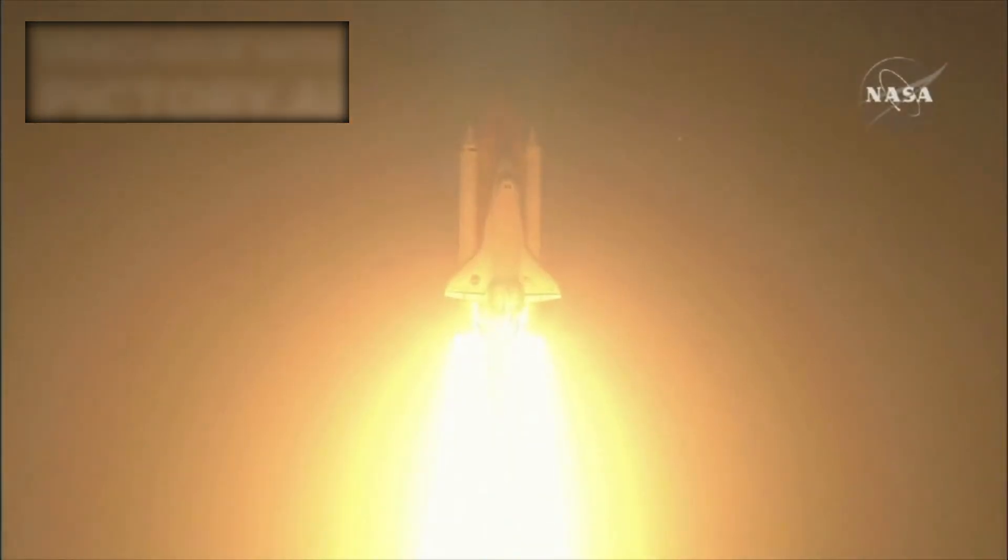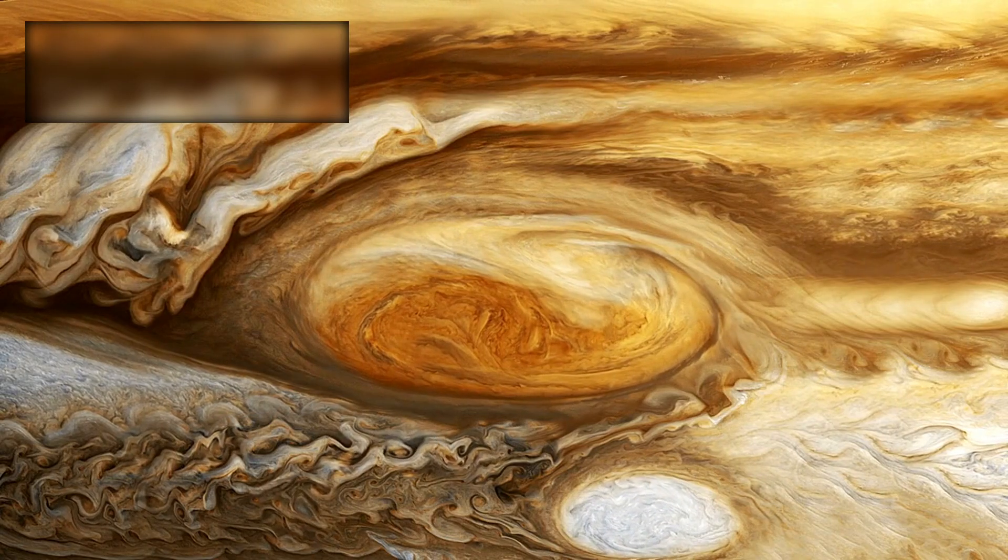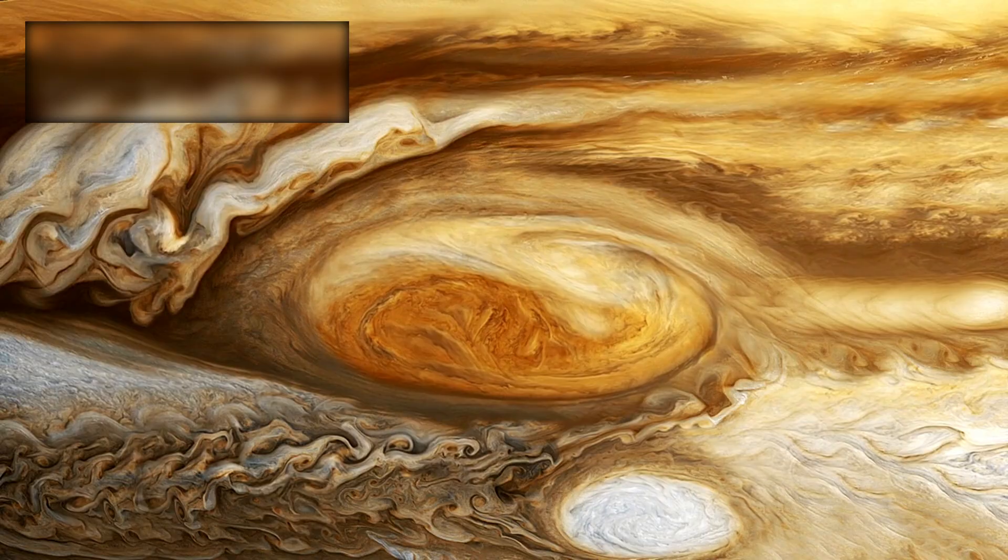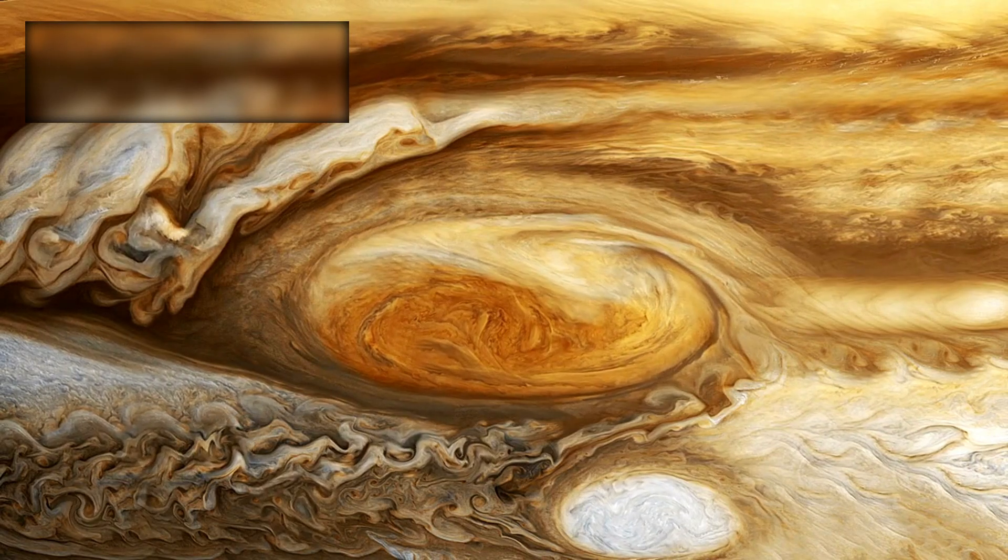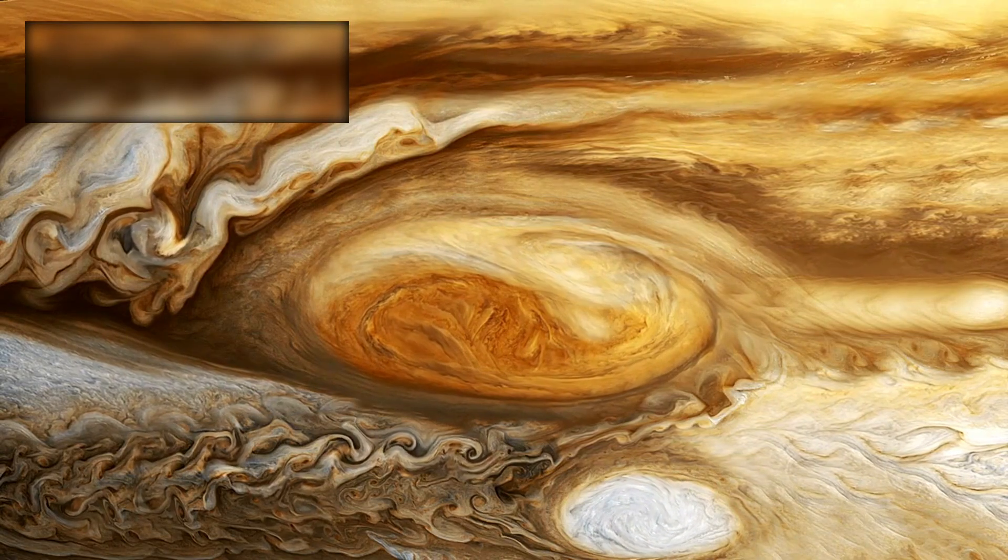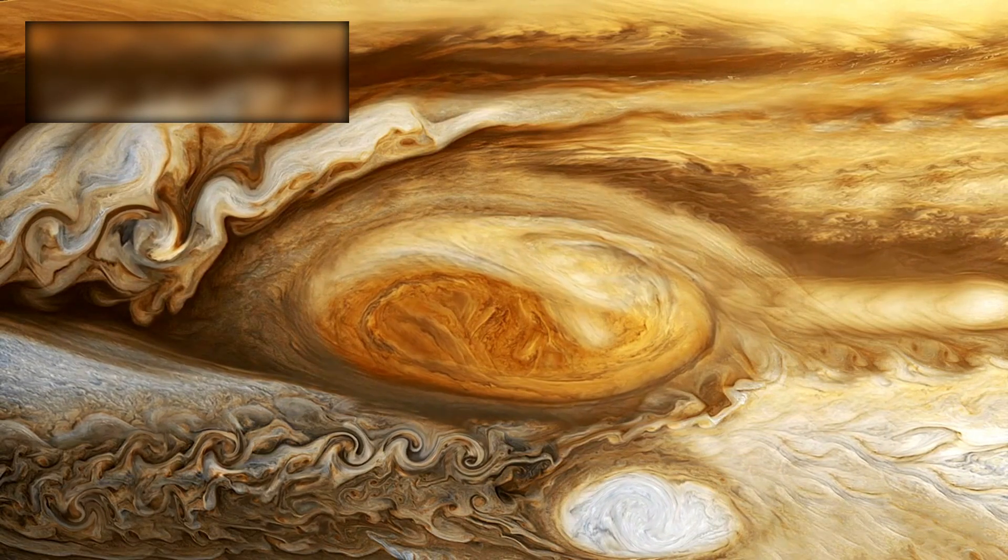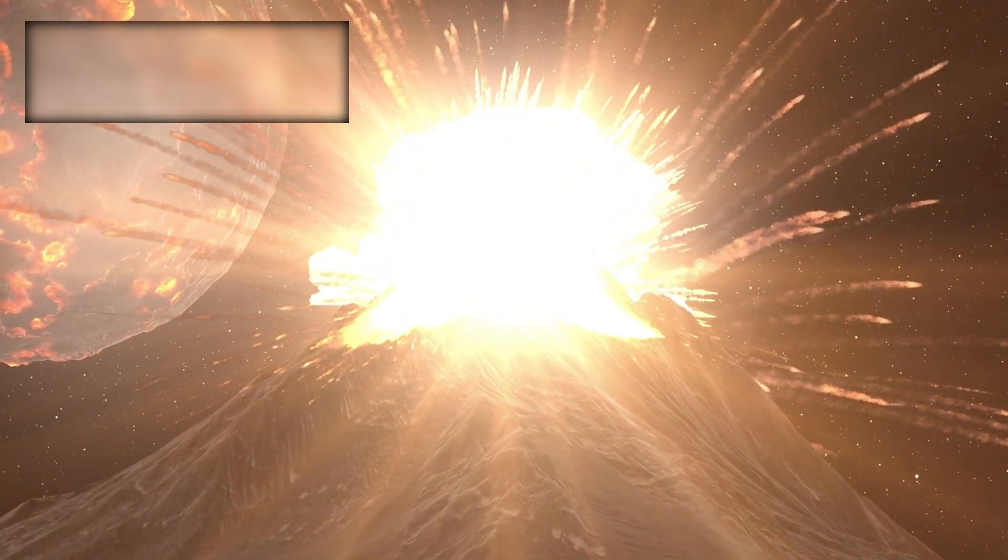Even in its earliest encounters, Voyager proved its worth. It gave us jaw-dropping close-ups of Jupiter's massive great red spot, revealed swirling storms and turbulent cloud systems, and even caught glimpses of lightning in Jupiter's atmosphere, something scientists had long debated but never confirmed. It also made a discovery that stunned the scientific world.